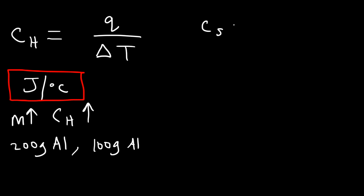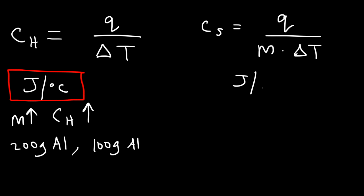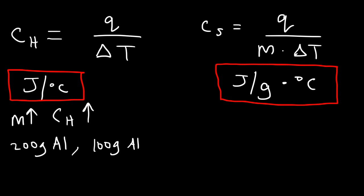Now, the specific heat capacity is the heat absorbed divided by the mass times the change in temperature. The units for specific heat capacity are joules per gram per Celsius. The specific heat capacity is an intensive property — it does not depend on the mass. If you increase the mass of the substance, the specific heat capacity will not change.